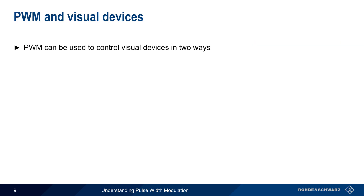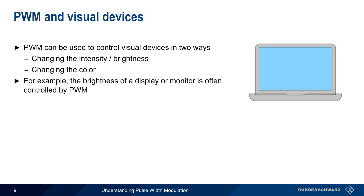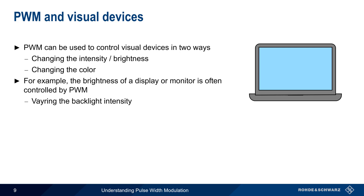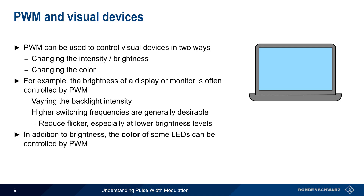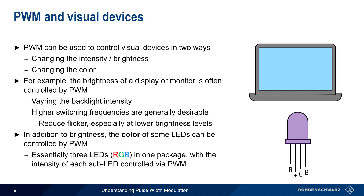Pulse width modulation can be used to control visual devices in two ways: by changing intensity or brightness, and by changing the color. For example, the brightness of a display or monitor is often controlled using pulse width modulation to vary the intensity of the backlight. In this application, higher switching frequencies are generally desirable, because higher switching frequencies reduce visible flicker, especially at lower brightness levels. In addition, the color of some LED packages can also be controlled using pulse width modulation, where the intensity of three individual LEDs are used together to produce the desired color.